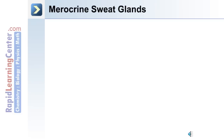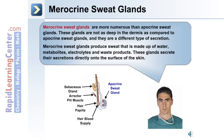The other type of sweat glands are merocrine sweat glands. These are more numerous than apocrine sweat glands. They are not as deep in the dermis as compared to apocrine sweat glands, and they have a different type of secretion. These glands secrete sweat, which is made up of water, metabolites, electrolytes, and waste products. They secrete their secretions directly onto the surface of the skin.